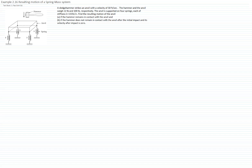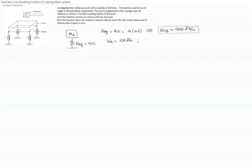The first thing I will do is draw my equivalent system before the hammer strikes. That will be the weight of 100 pounds and an equivalent spring constant of 4k. That equivalent spring constant is calculated as 4 times 100, which gives us 400 pounds per inch. The weight of the anvil is 100 pounds and the weight of the hammer is 12 pounds. The variable will be measured with respect to the static equilibrium position of the anvil by itself, so we will not take into consideration the hammer for where we want to measure our response.